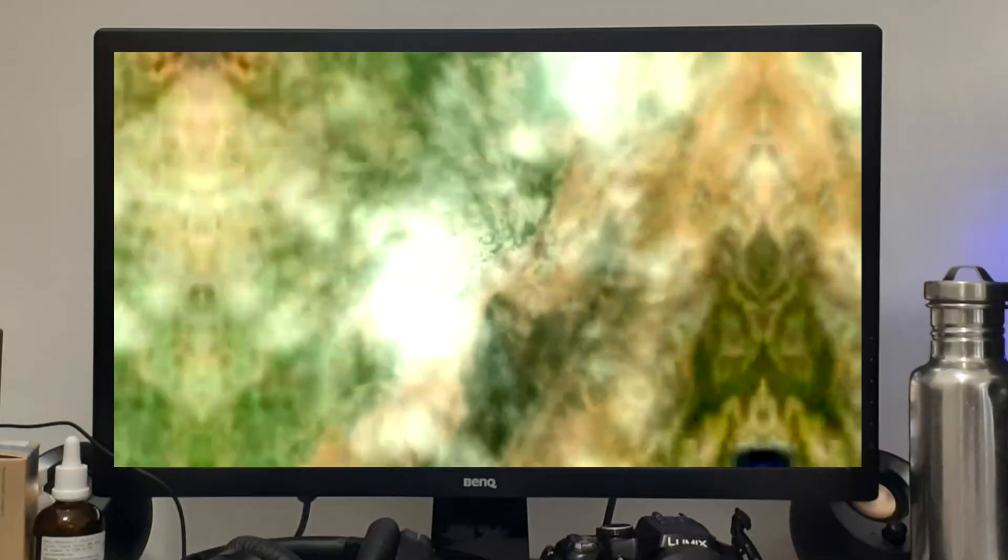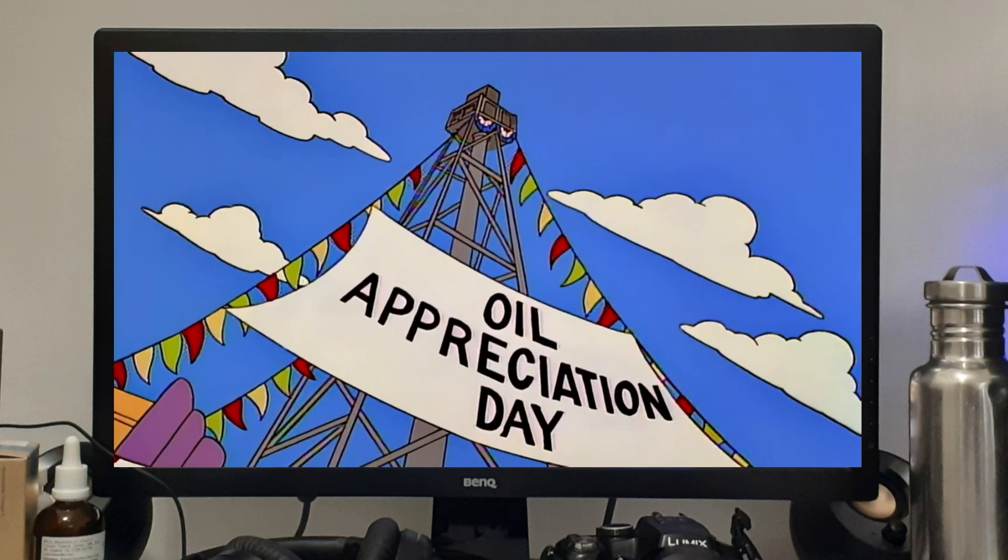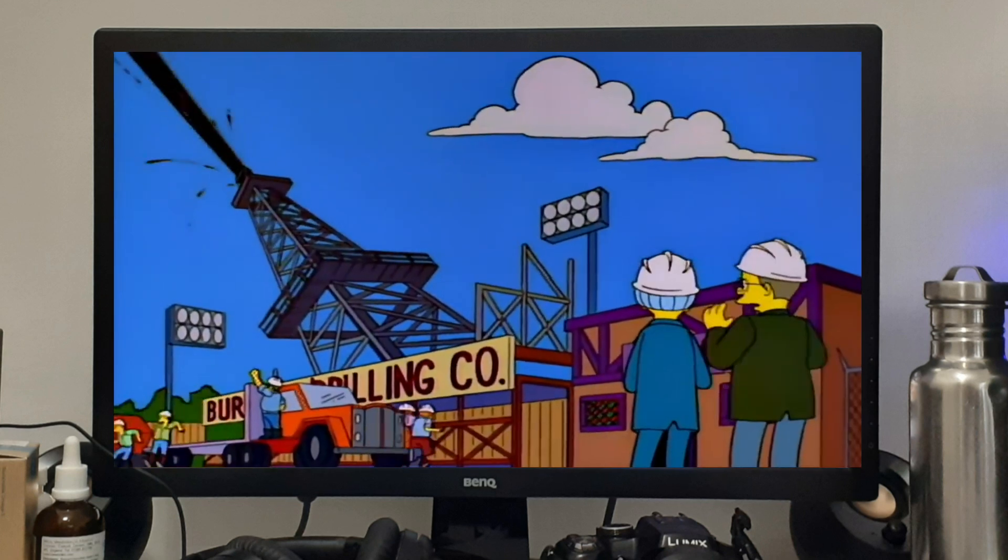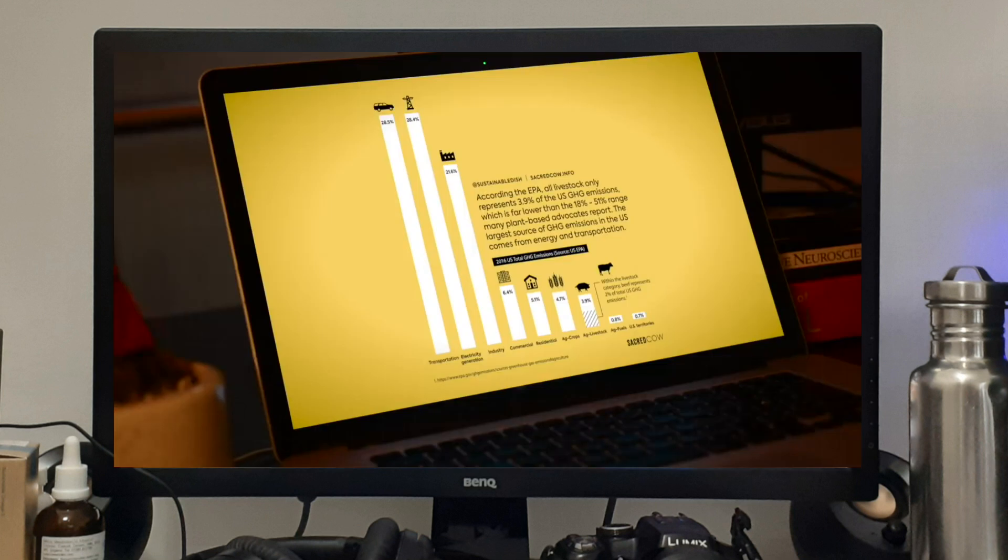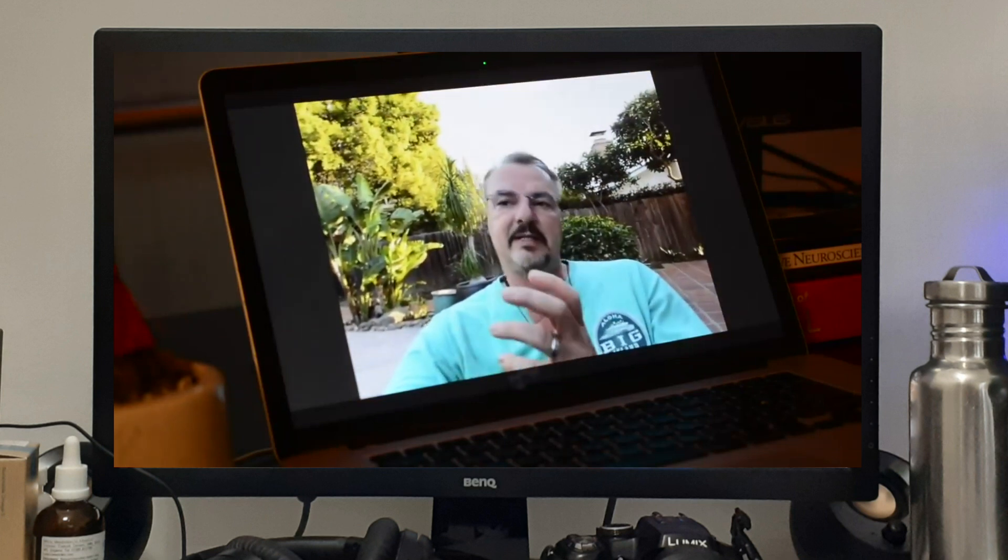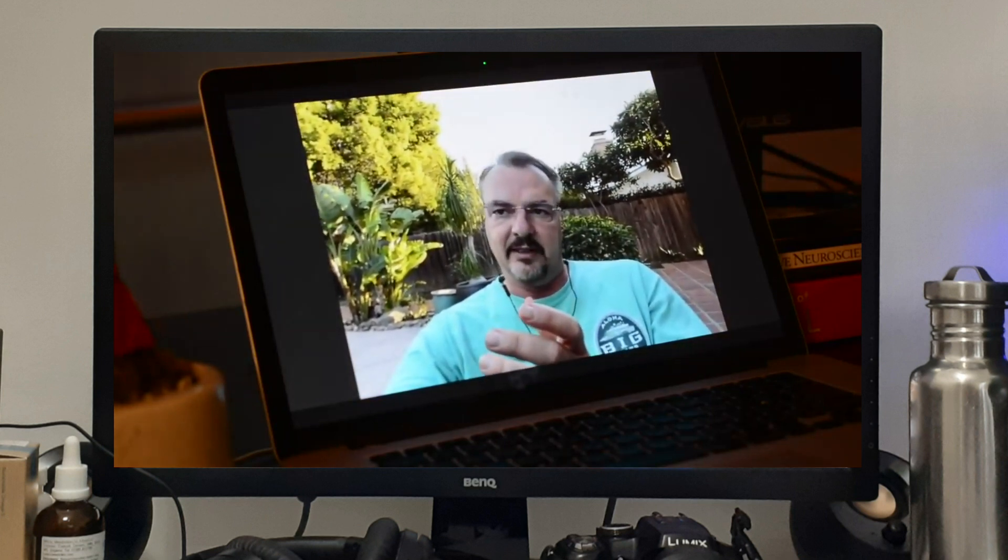In the United States livestock is dwarfed by fossil fuel sectors such as transportation, power production and use and so on. So our livestock sector in the United States according to the EPA is four percent. If you do life cycle assessment it's a little higher than that but it's around maybe five percent in total. In a place like Paraguay it's around 50%. In a place like Ethiopia it's around 90 percent.